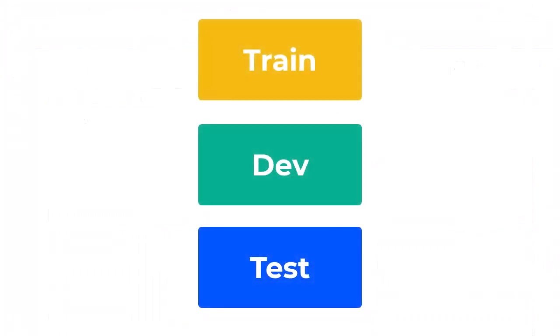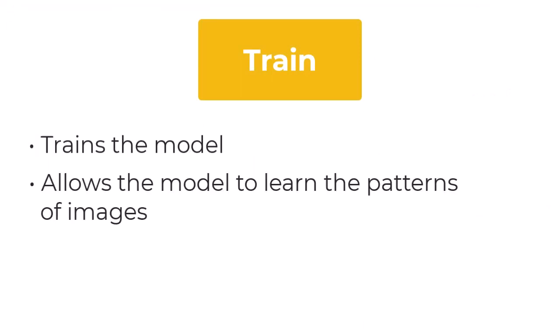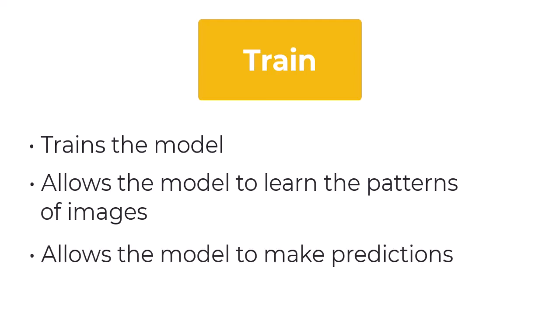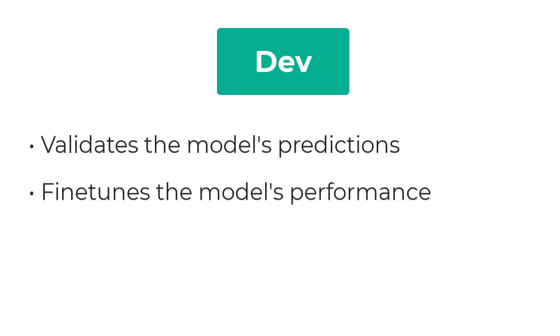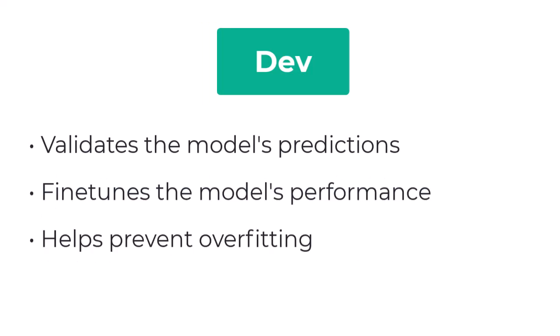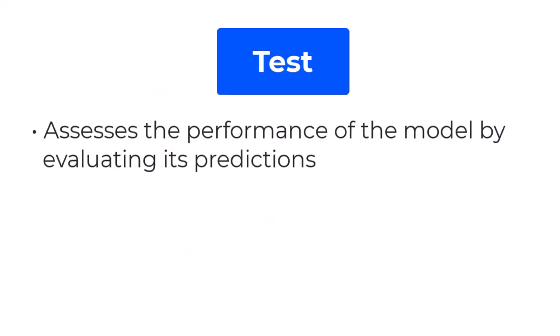Each dataset serves a different purpose. The Train set trains the model, allowing the model to learn the patterns of those images and make predictions. The Dev set validates the model's predictions and fine-tunes its performance. This dataset helps prevent overfitting, which is when a model simply memorizes the pictures and doesn't understand what characteristics to look for when identifying objects of interest. The Test set assesses the performance of the trained model by evaluating its predictions on unseen examples.